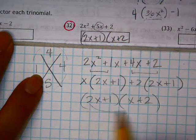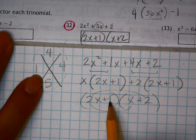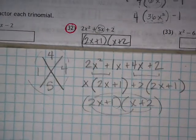We double check. 2x squared, that works. 4x plus x is 5, and 2 is 2, so that works just beautifully.